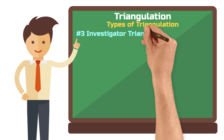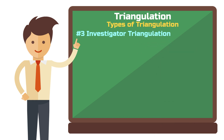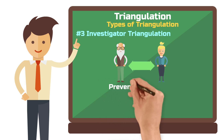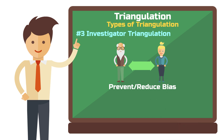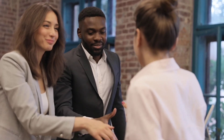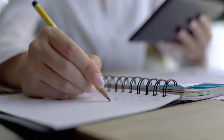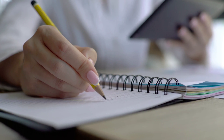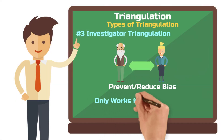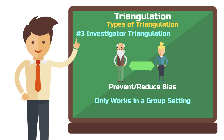The third type is investigator triangulation. This involves switching sides briefly — two or more researchers can prevent subjective distortions or a so-called bias on the part of the researcher. In our interview example, you could use two interviewers to collect the data. You would conduct it together, take notes independently, and then compare your observations. When you analyze the data, you code the interview transcripts independently and then discuss your results. This type of triangulation is only really feasible if you work in a group.